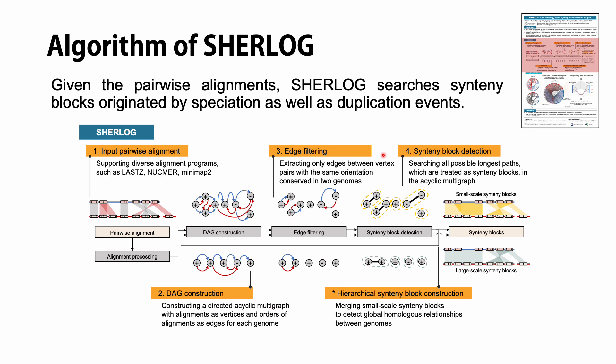In the edge filtering step, Sherlock accepts only edges between node pairs with the same orientation that are conserved in two genomes. Finally, in the syntenic block detection step, Sherlock searches all possible longest paths in the graph, which are treated as syntenic blocks.